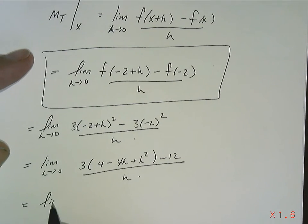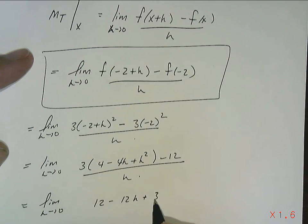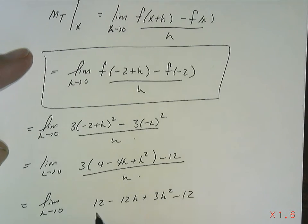This is going to be the limit as h approaches 0 of 12 minus 12h plus 3h squared minus 12 over h.